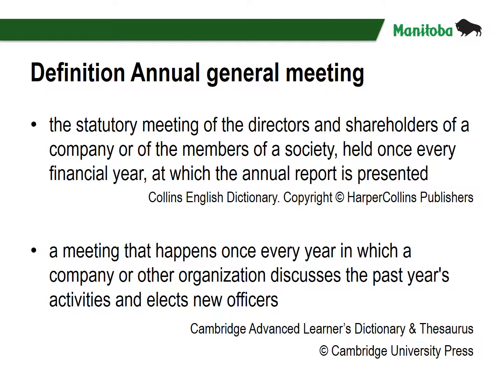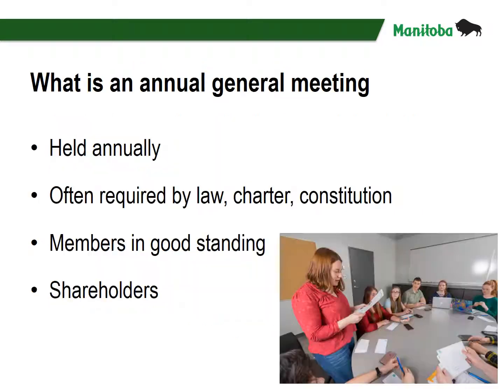Collins English Dictionary defines Annual General Meeting as the statutory meeting of the directors and shareholders of a company, or of the members of a society, held once every financial year, at which the annual report is presented. The Cambridge Advanced Learner's Dictionary further defines the Annual General Meeting as a meeting that happens once every year in which a company or other organization discusses the past year's activities and elects new officers. An Annual General Meeting, also called an AGM or Annual Meeting, is a meeting of official bodies and associations involving the general public, including companies with shareholders, and is often required by law, constitution, charter, or bylaws governing the body.